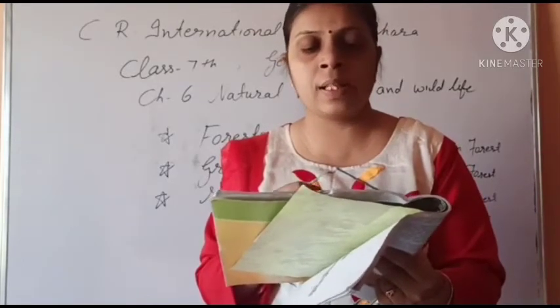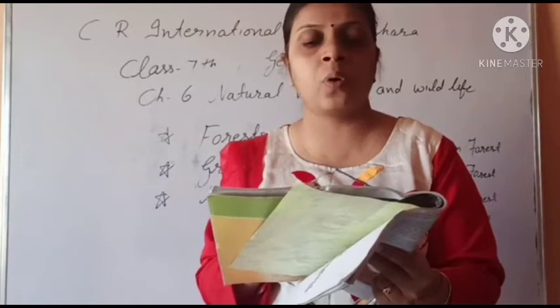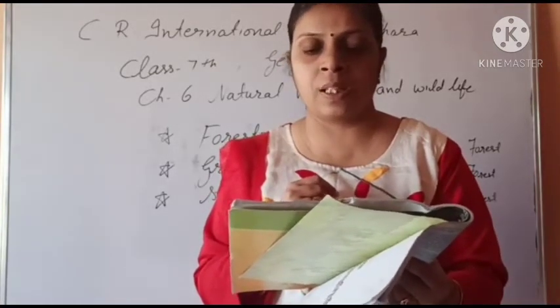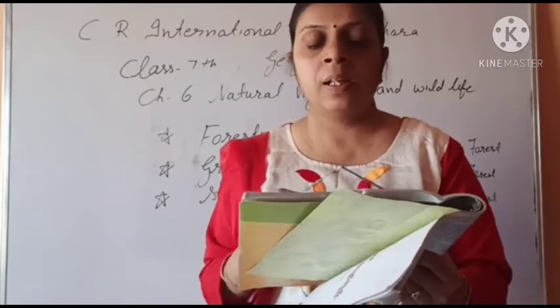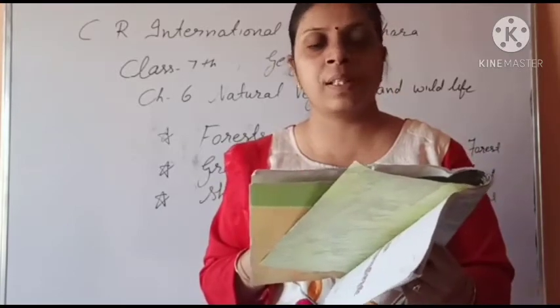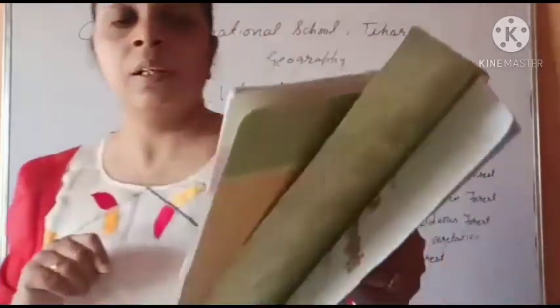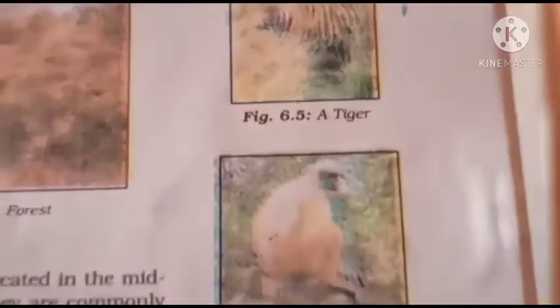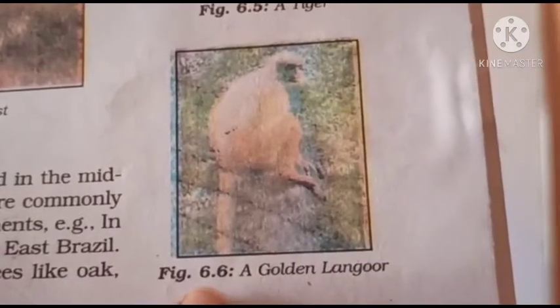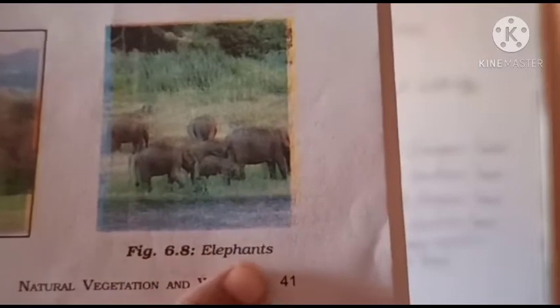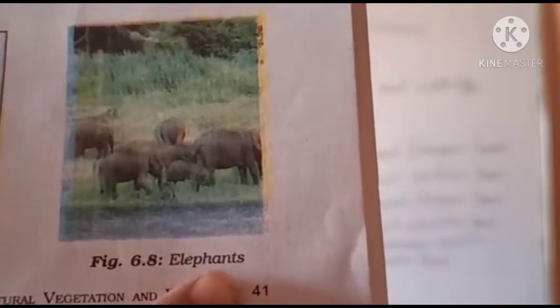Tiger, lions, elephants, langurs, and monkeys are the common animals of these regions. Their pictures are shown in figures 6.5, 6.6, and 6.8 — 6.5 میں tiger ہے، 6.6 میں golden langur ہے، اور 6.8 میں elephant ہے۔